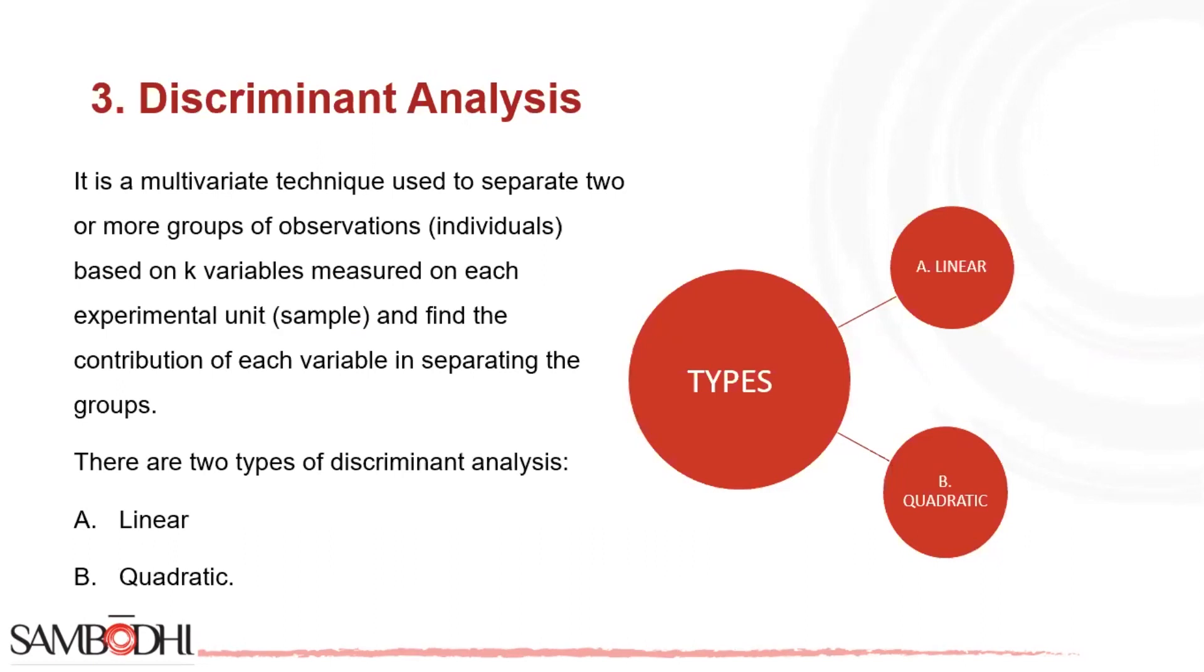This model is made up of discriminant functions. For more than two groups, a set of discriminant functions based on linear relationships of the predictor variables provides the best discrimination between groups. There are two types of discriminant analysis: linear and quadratic.